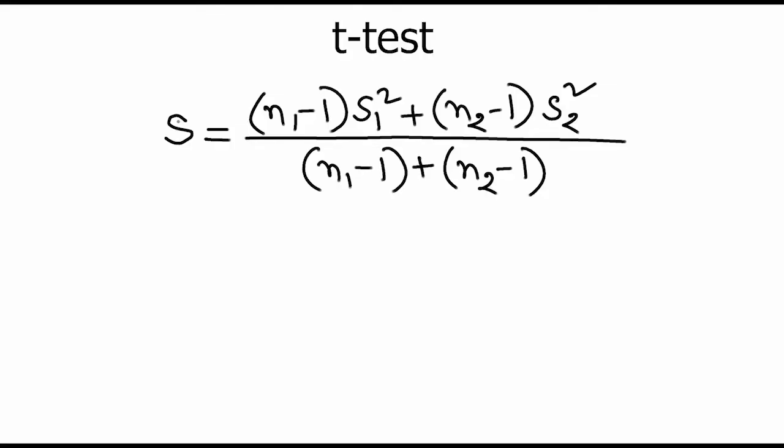The standard deviation in the previous equation is calculated as: s equals the square root of [(n1 minus 1) times s1-squared plus (n2 minus 1) times s2-squared], divided by (n1 minus 1 plus n2 minus 1). Here, n1 and n2 are the total number of samples in each group, and s1 and s2 are the standard deviations of each group. One fundamental assumption to perform the t-test is that both samples are normally distributed. The t-test can also be performed before and after any specific treatment is applied, which is called a paired t-test.